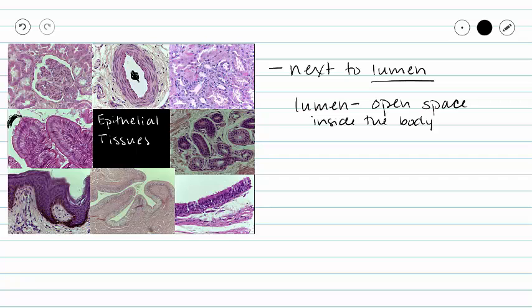All of our epithelial tissues are going to separate our body from the outside world. Here we have the inside of our trachea, and there's going to be air inside — air that comes from the outside world. So this epithelium protects the inside of our body from the outside world.